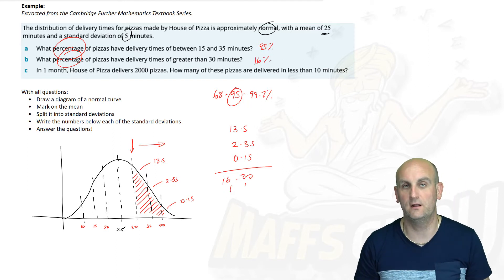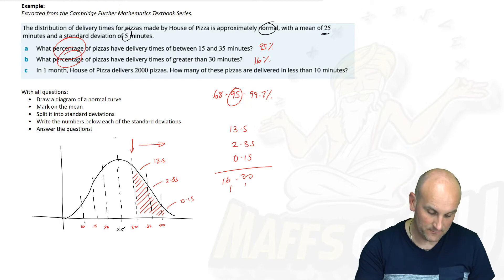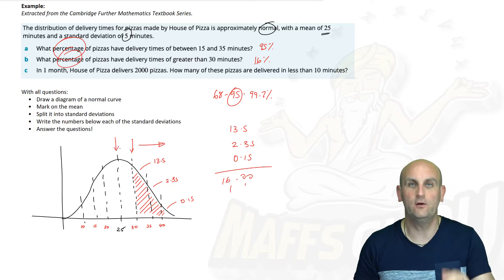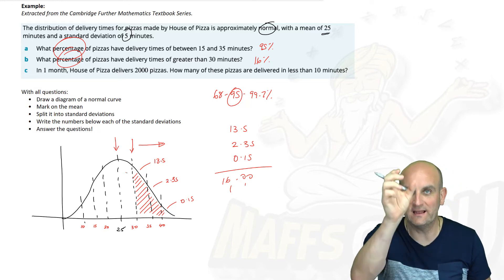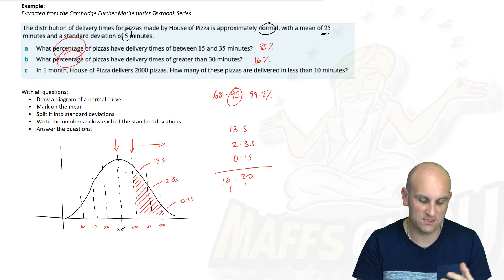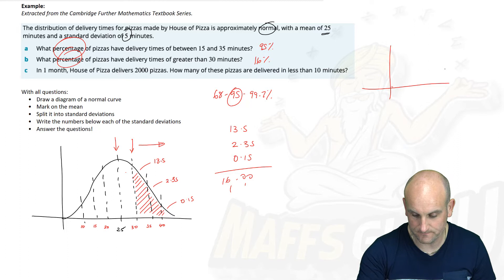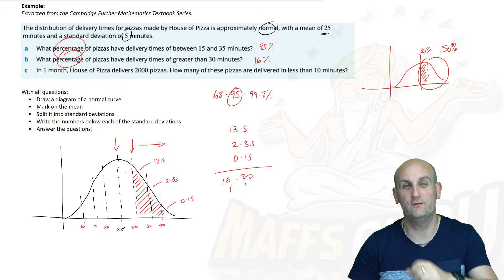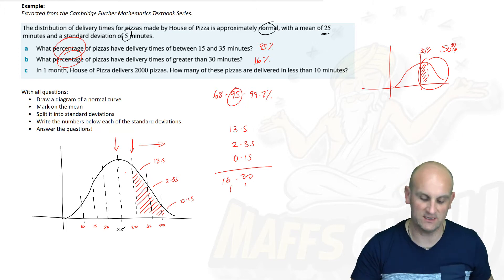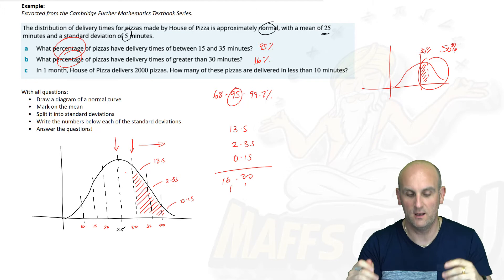Could I have worked that out in another way? Yes. That one section there we know is 34% of the data. We know the whole half of that is 50% of my data. So if I do the 50% minus the 34%, I also get 16%.